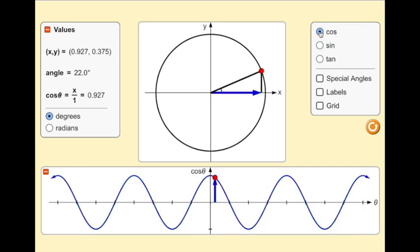Selecting the special angle option places white dots on the circle associated with key angles. Select and drag the red dot to white dot spaces and view the values associated with these key angles.